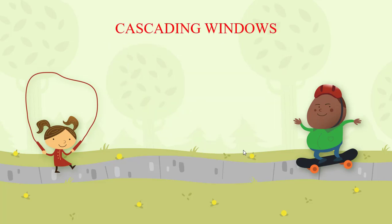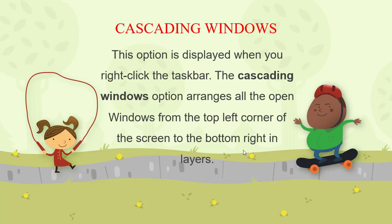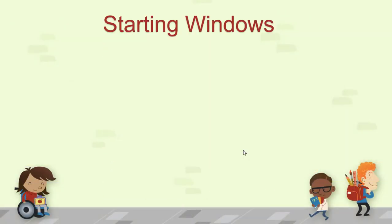The next feature is Cascading Windows. This option is displayed when you right-click the taskbar. The cascading windows option arranges all open windows from the top-left corner of the screen to the bottom-right in layers. So if you already have many windows open, it arranges them all in a cascade form. This is also a good feature of Windows 7.